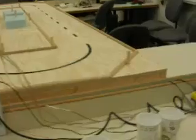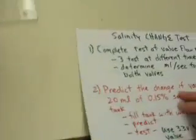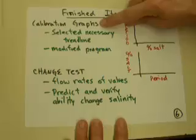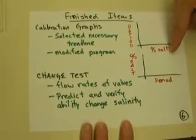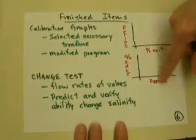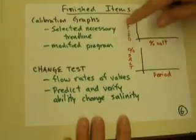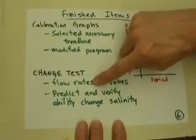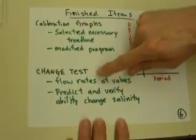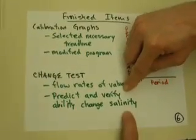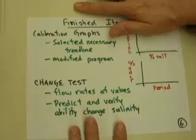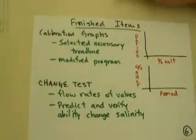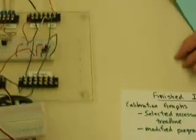The finished items, you should have the two graphs from the calibration for both period versus salt, and then salt versus period. Select which graph is appropriate to complete your modification to the program. Then you'll do the change test, and that, of course, involves the flow rates for the valves, a simple test for that, and then prediction and verification of your ability to change the salinity. These are the things very similar to the temperature week with the calibration and then a test of your ability to apply that information. That's it for this week, and we'll see you in class.